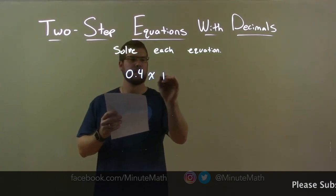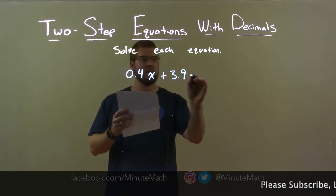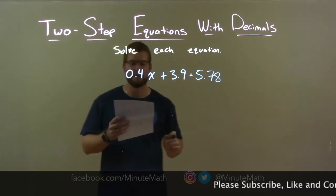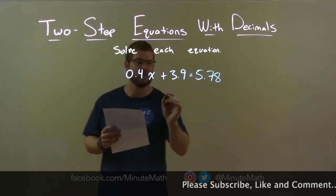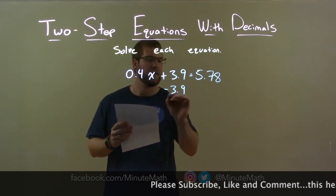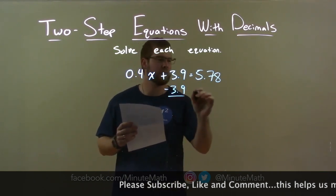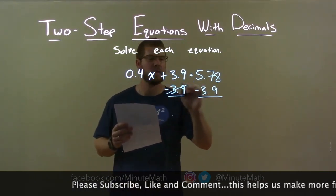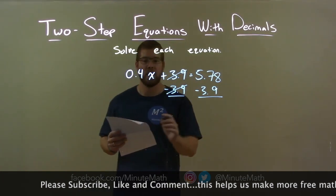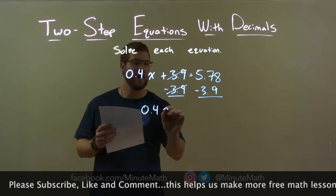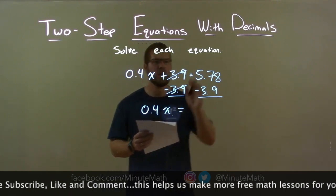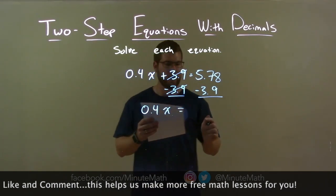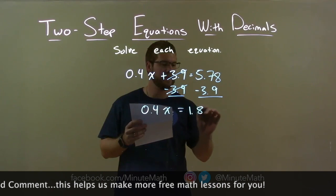0.4x plus 3.9 equals 5.78. First thing I want to do is subtract 3.9. Remember, opposite of addition is subtraction. We subtract 3.9 from both sides. 3.9 gets eliminated on the left, giving me 0.4x by itself. On the right, 5.78 minus 3.9 comes out to be 1.88.